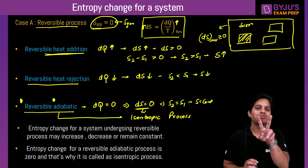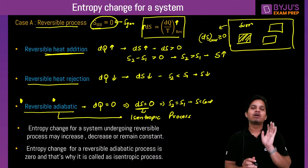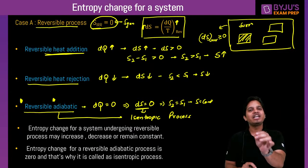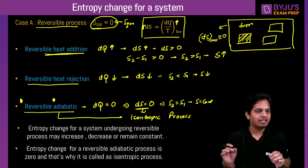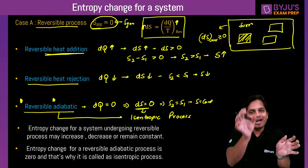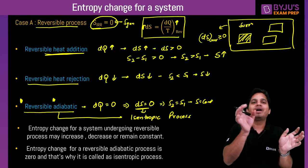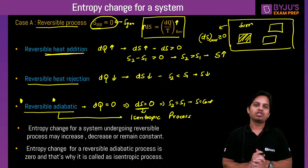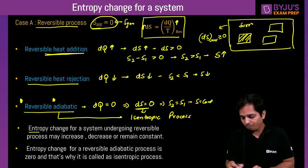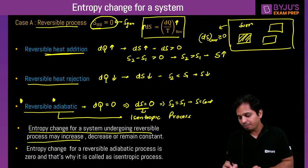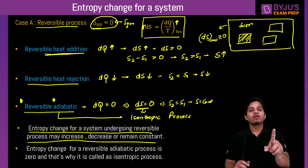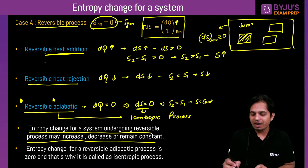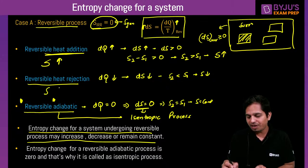Clausius inequality is stated as — cyclic integral, so we are asking for a cycle. What is Clausius inequality? Cyclic integral of dQ/T is less than or equal to zero. This is a 10-second question. It is an IES question but there is a high possibility they can ask this in HPCL.